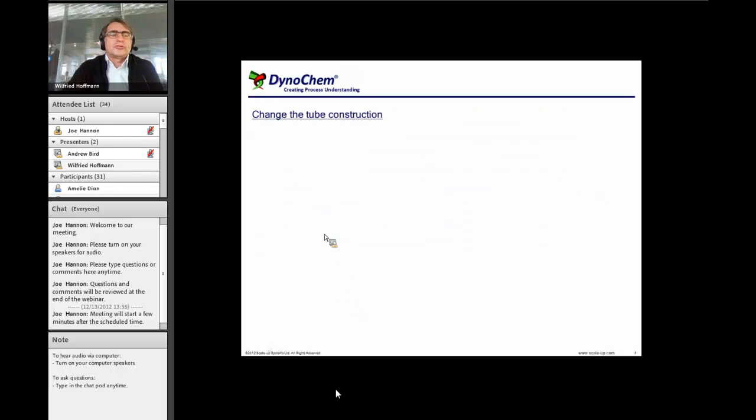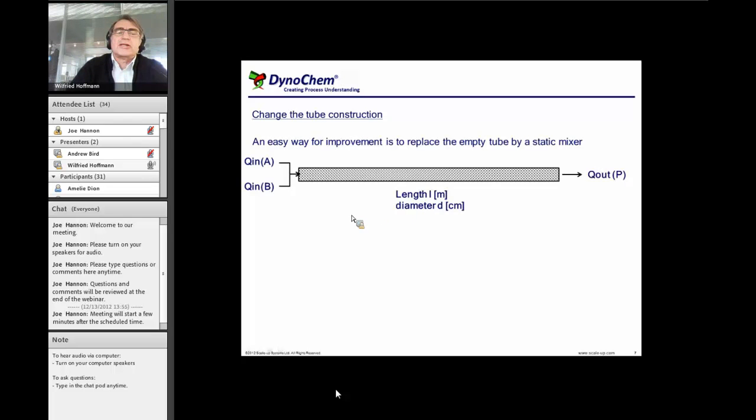So let's start first with a change in the tube construction. And it's quite an easy way because the Reynolds number was calculated for an empty tube. Nobody forces us to use an empty tube and if we replace the empty tube by a static mixer.